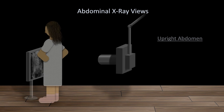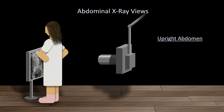Another view is the upright abdominal view. What's shown here is technically an upright PA view, in which the x-ray beam travels from the posterior to the anterior of the patient, though this view can also be taken with the patient facing forward, in which case it could be referred to as an upright AP view. But unlike with chest films, in which there is a significant difference between the AP and PA views, there is not with upright abdominal films. This view is best specifically for identifying small bowel obstructions, which is really its only major indication.